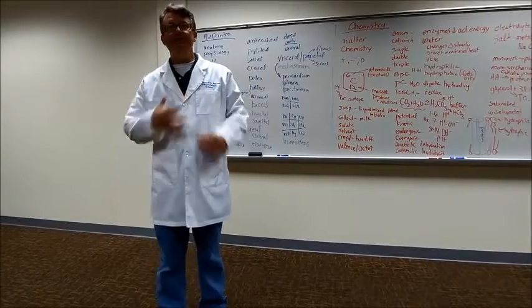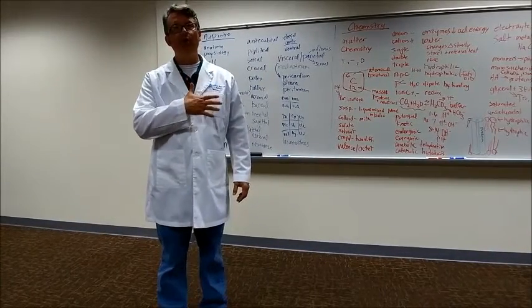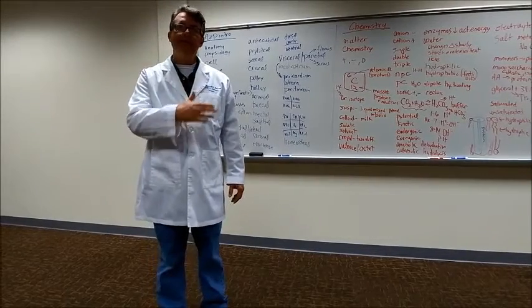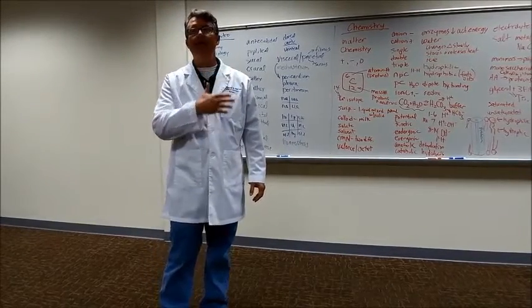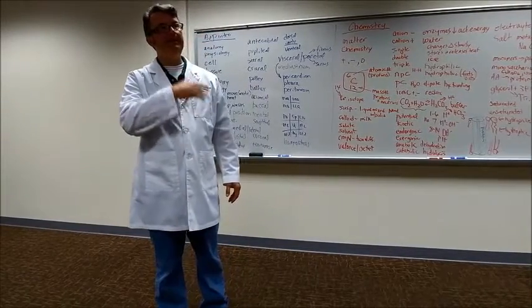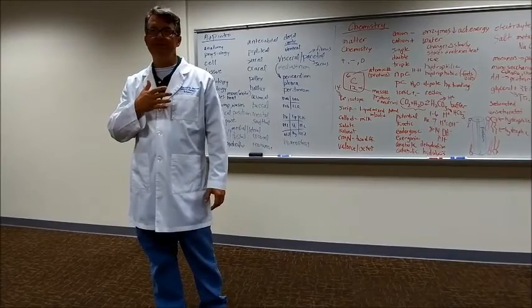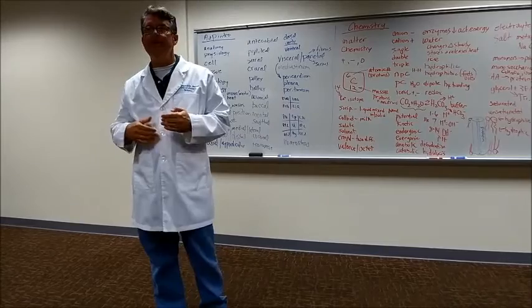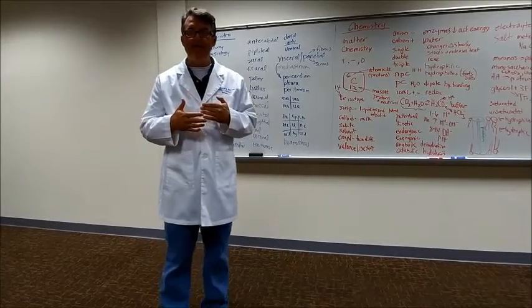On the heart, there is a visceral pericardium that lays directly on the heart, and then there is another layer called the parietal pericardium, and it has two layers. There's an outer fibrous layer and an inner serous layer, which secretes the serous fluid, which kind of helps lubricate between that little thin space between the outer layer and the inner layer.